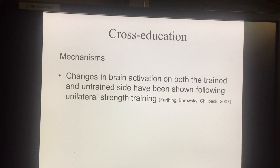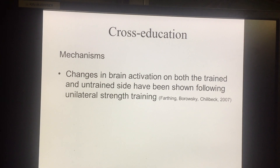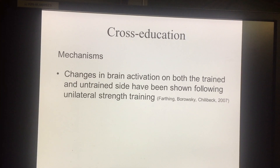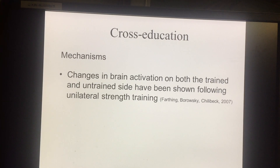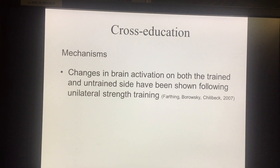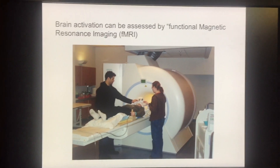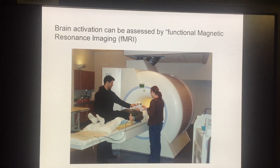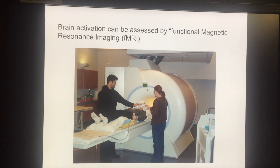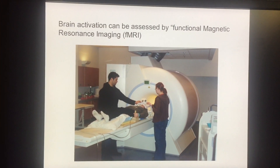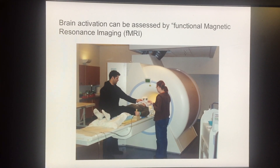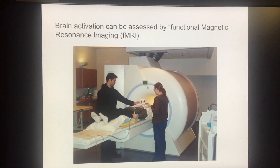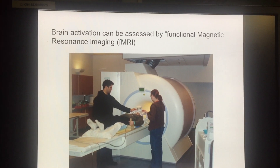Some mechanisms behind cross-education: we assessed brain activity during unilateral training and showed that there's a crossover of brain activation from one side of the brain to the other. Using functional magnetic resonance imaging, we measured brain activity while participants performed a handgrip-type exercise, before and after training.